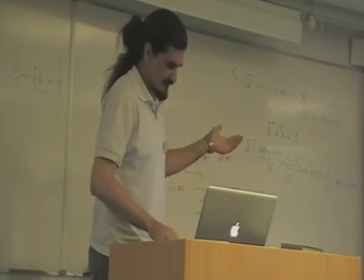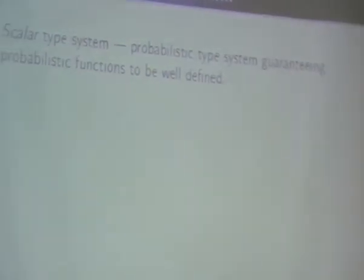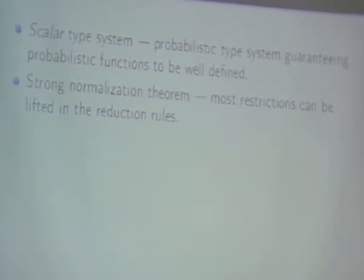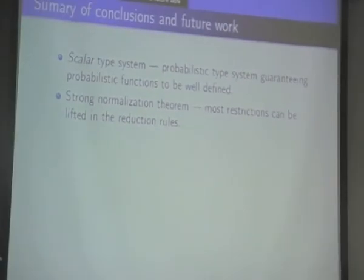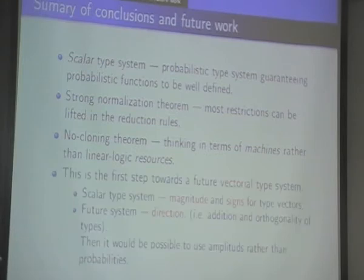So conclusions. This scalars system is just like a probability type system. The strong normalization theorem allows to remove most of the restrictions in the reduction rules. And the non-cloning theorem gives us a thinking in terms of machines rather than sources, like a linear machine. But here we are thinking in some way in machines. So there is no universal machine. This is the first step.